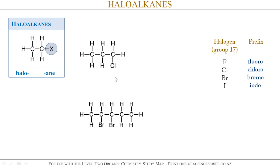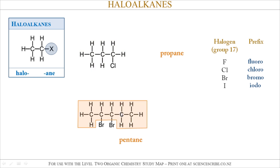To name a haloalkane, you first have to know how to name alkanes. That's the bit here in orange — that part's propane in the first example. Now, in this first example, I have a Cl on the first carbon atom, so Cl corresponds to chloro. First carbon atom, I put a one in front, so one chloropropane.